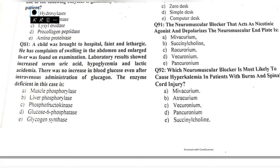Question 81: a lethargic child has abdominal distension, large liver, increased serum uric acid, hypoglycemia, and lactic acidemia, with no increase in blood glucose even after intravenous glucagon. Which enzyme is deficient — muscle phosphorylase, liver phosphorylase, phosphorylase kinase, glucose-6-phosphatase, or glycogen synthase? This is Von Gierke's disease (type 1 glycogen storage disease), in which there is a deficiency of glucose-6-phosphatase.